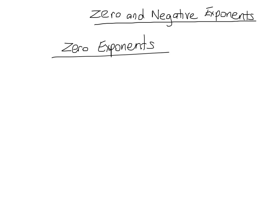There is a rule that states that any number — let's call any number a — to the power of zero will give you one. Any number to the power of zero gives you one. So it doesn't matter if you said three to the power of zero, for example, that's one, or 1092 to the power of zero — still one. Any number to the power of zero is one, and that's a rule.